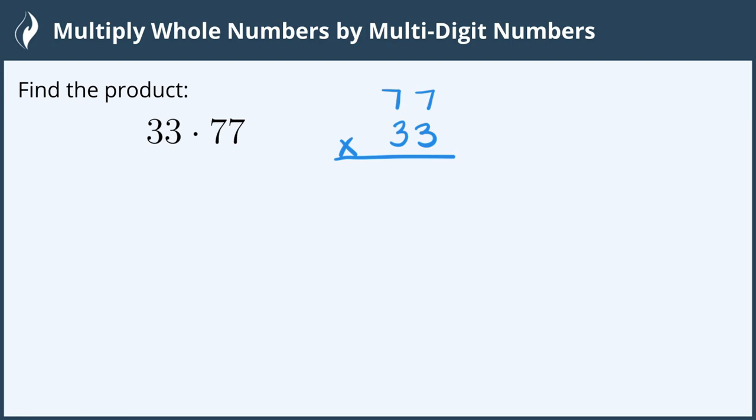Now I start in the bottom right hand corner and I do this 3 times the 7 above it which gives us 21. We carry the 2 for the 20 and the 1 goes below the 3.